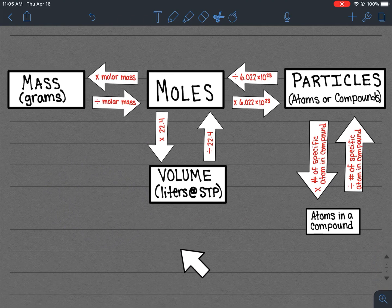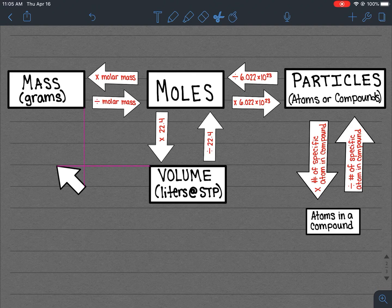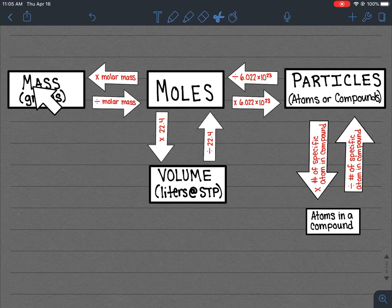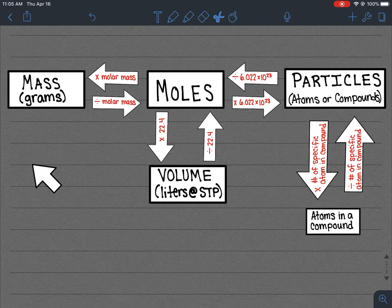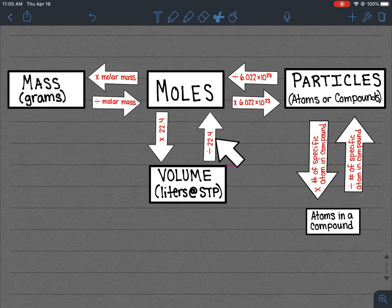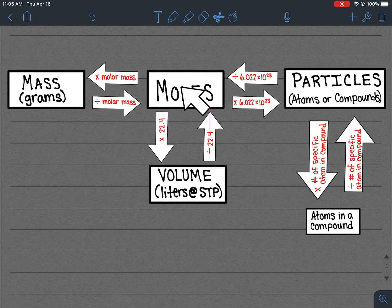At standard temperature and pressure, ideal gases will occupy a volume of 22.4 liters. And so if you are starting with volume, like they give you the volume of hydrogen gas and they're asking you for, let's say grams of that gas. We would start off with our volume. We would divide by 22.4 liters. That would give us the moles of gas. Then we would multiply by the molar mass of that gas to get the mass in grams.